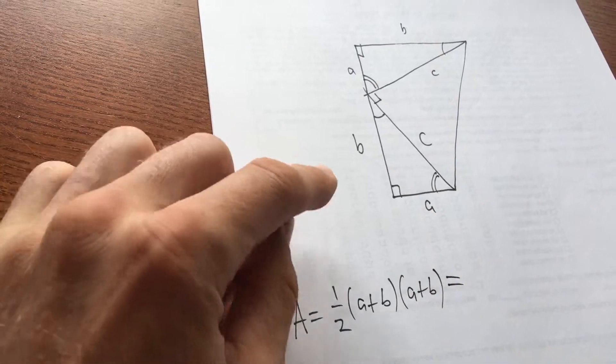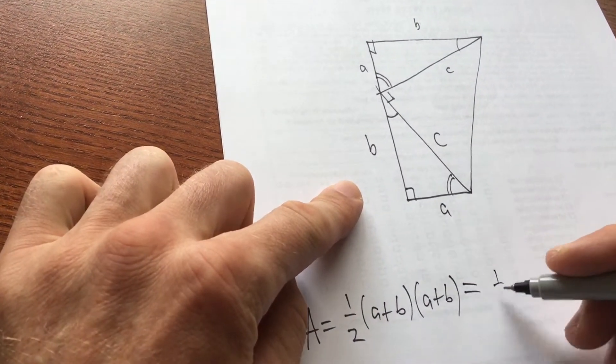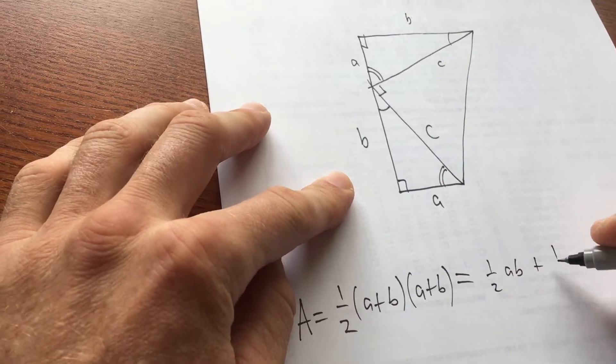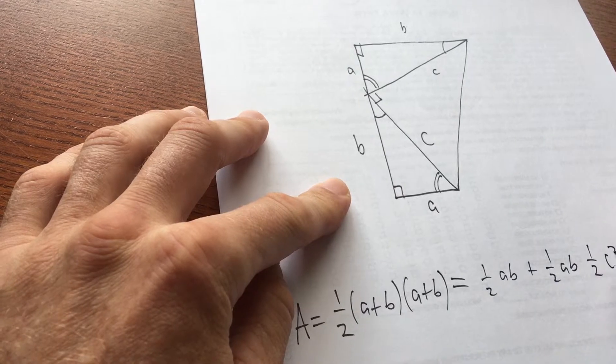And we can also do that by adding up the areas of the three triangles. We've got this first triangle here, one half ab. This second triangle here, one half ab. And this triangle here, one half c squared.